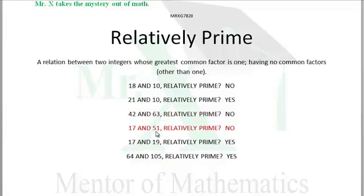17 and 51, are they relatively prime? No, because 17 actually goes into 51. 17 times 3 is 51, so 51 and 17 both have the factor of 17. Relatively prime? Nope.